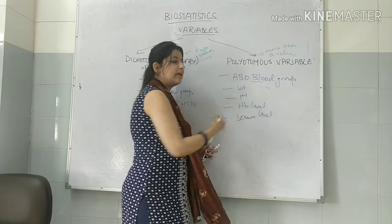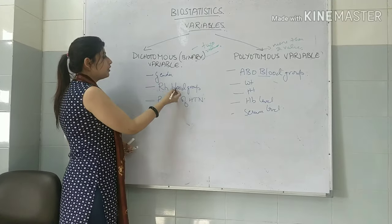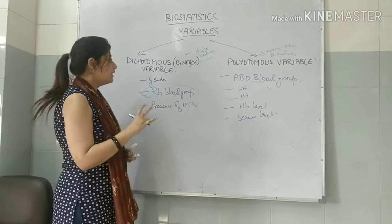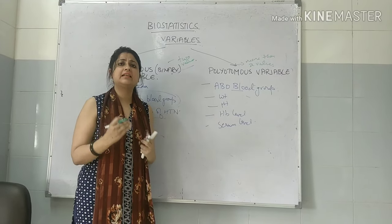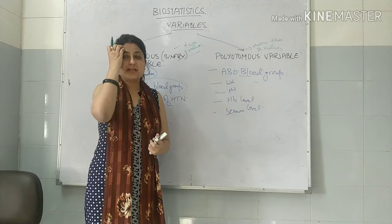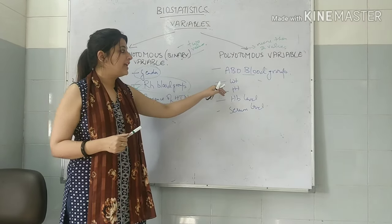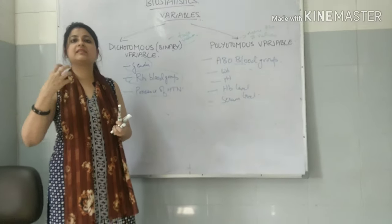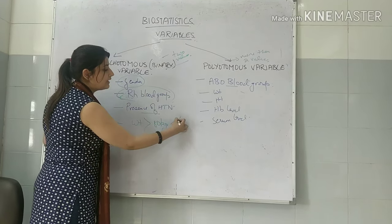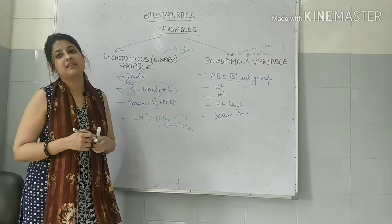For example, ABO blood group can be A positive, B positive, AB, or O — more than two values, so it is polytomous. But RH blood group can only be RH positive or RH negative — just two values, so it is dichotomous. Presence of hypertension or any disease is also dichotomous: the disease is either present or absent. Gender is dichotomous: male or female. Weight is polytomous as it can take up many values like 80 kg, 80.5 kg. But if asked 'is weight more than 80 kg?', then it becomes dichotomous — just yes or no.